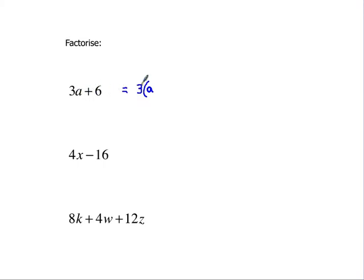And then I've got 3 lots of something over here to give me 6. That must be 2, and not only that, it must be positive 2. So the expanded version is now this, and I can check that: 3 lots of a is 3a, 3 lots of 2 is plus 6.